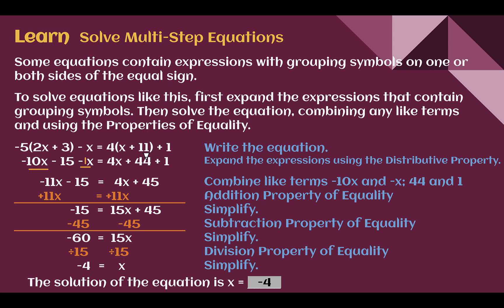Then I'm going to do the same thing to get rid of the grouping symbols on the other side — 4x plus 44. Once I've cleared my parentheses, I'm going to use those properties of equality to add or subtract and do the opposite to both sides. Adding 11x to both sides gets rid of the variable term off the left. Then I subtract 45 from both sides to get the constant term off the right. Finally, since I had 15x equals negative 60, I divide by the coefficient 15, and the solution is x equals negative 4.